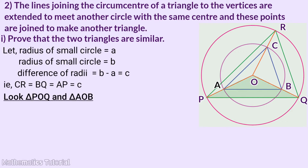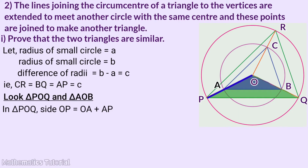Triangle POQ and triangle AOB: one side of triangle POQ is known as OA plus AP. This is OA into 1 plus AP by OA. AP is known, so OA plus AP. OA is called the small secondary radius, that is A.